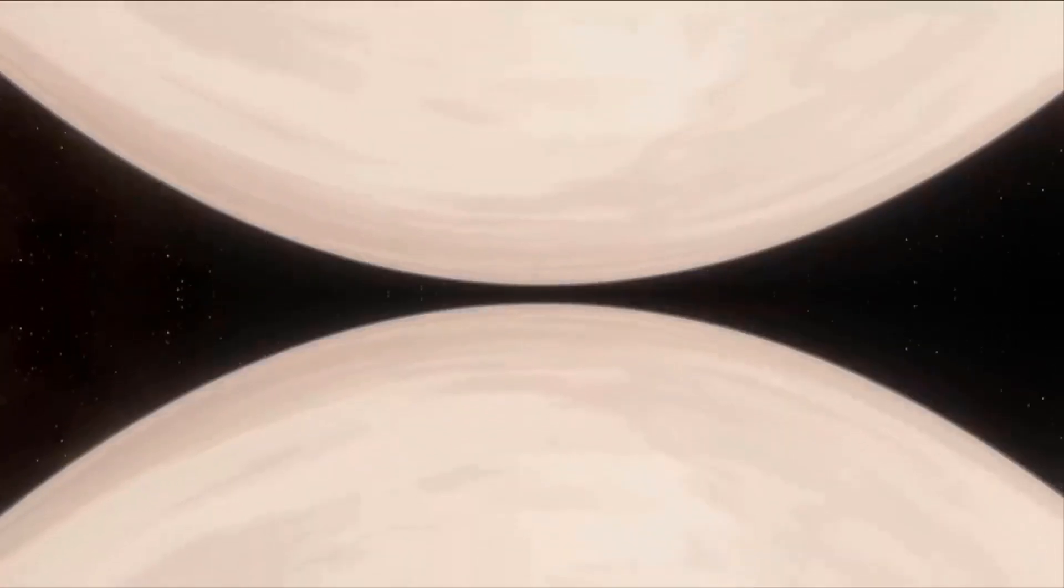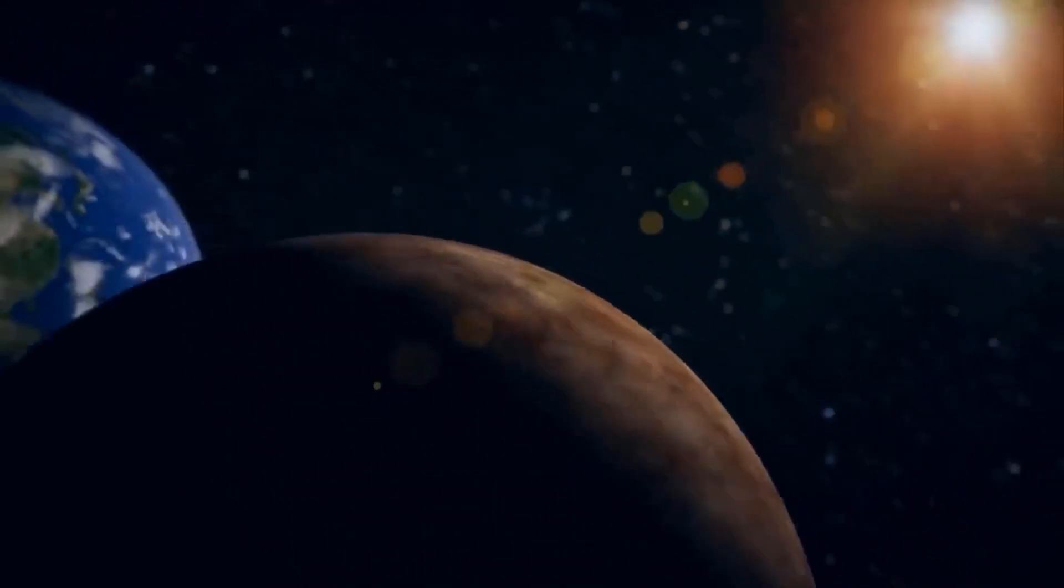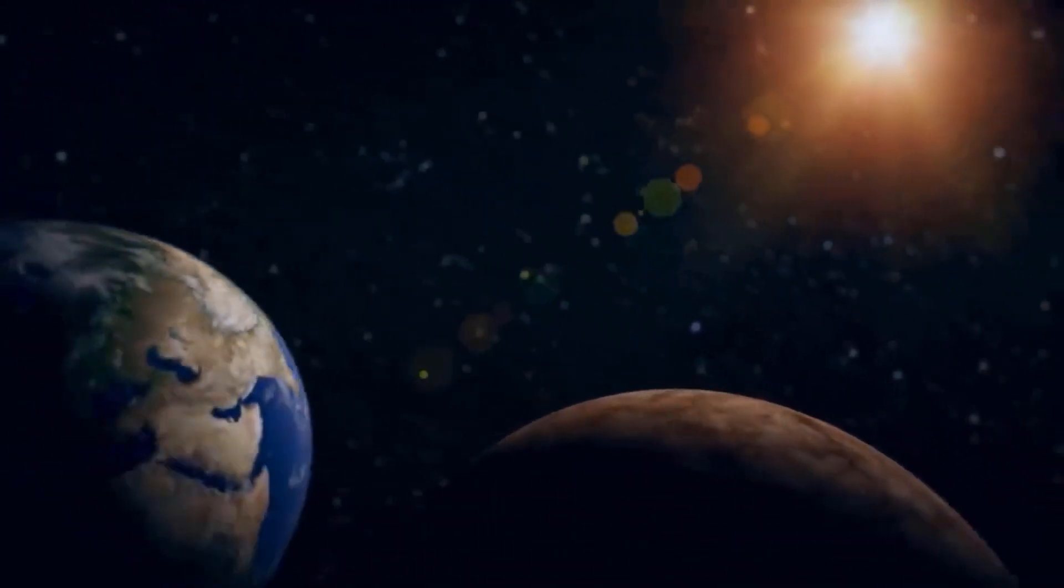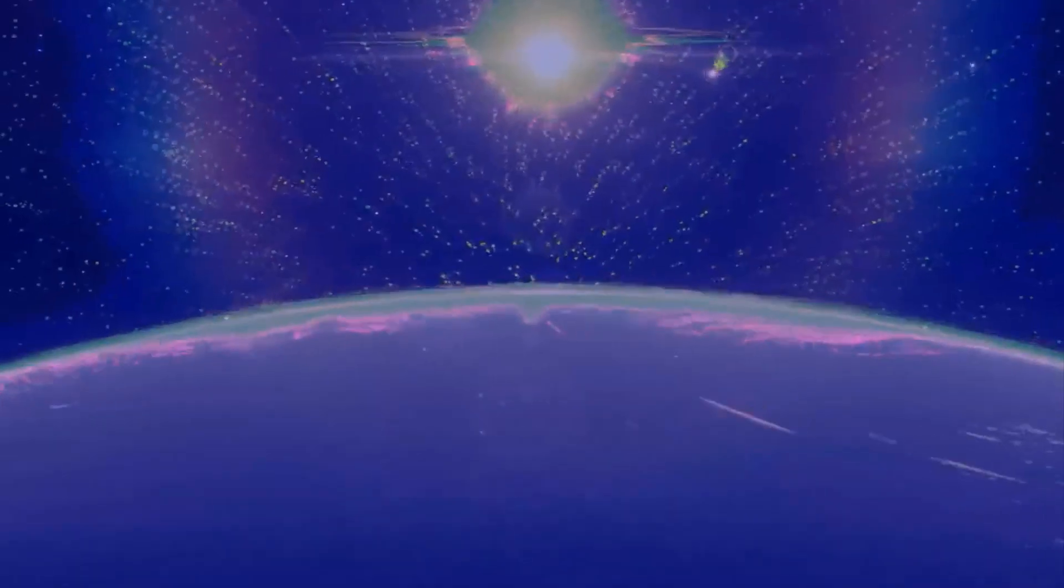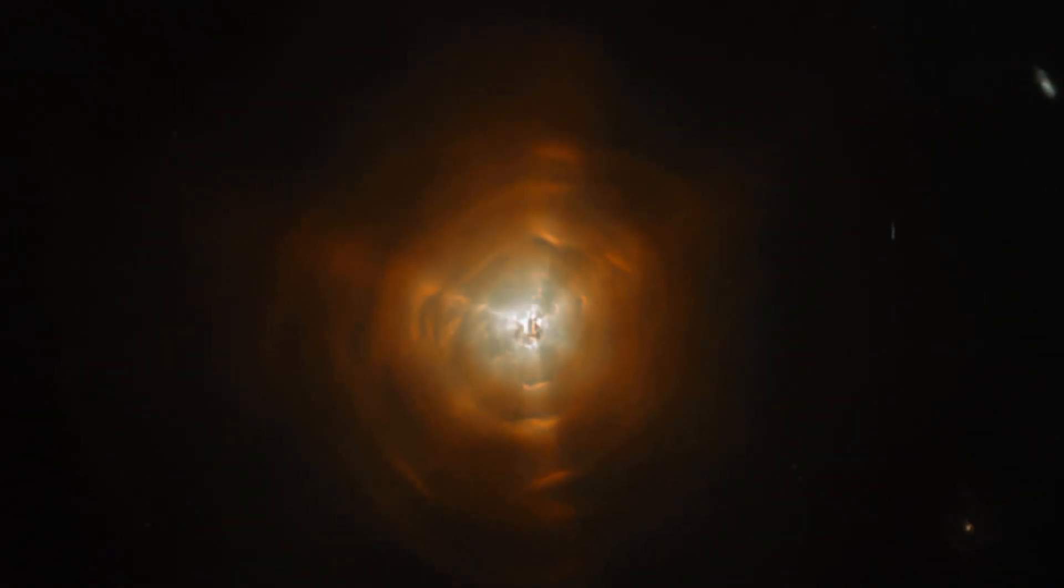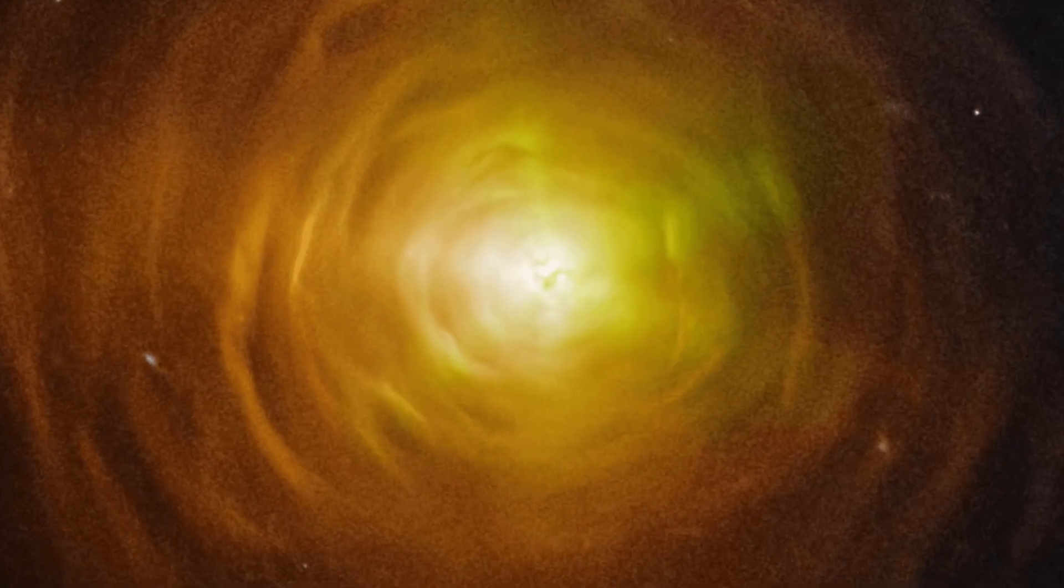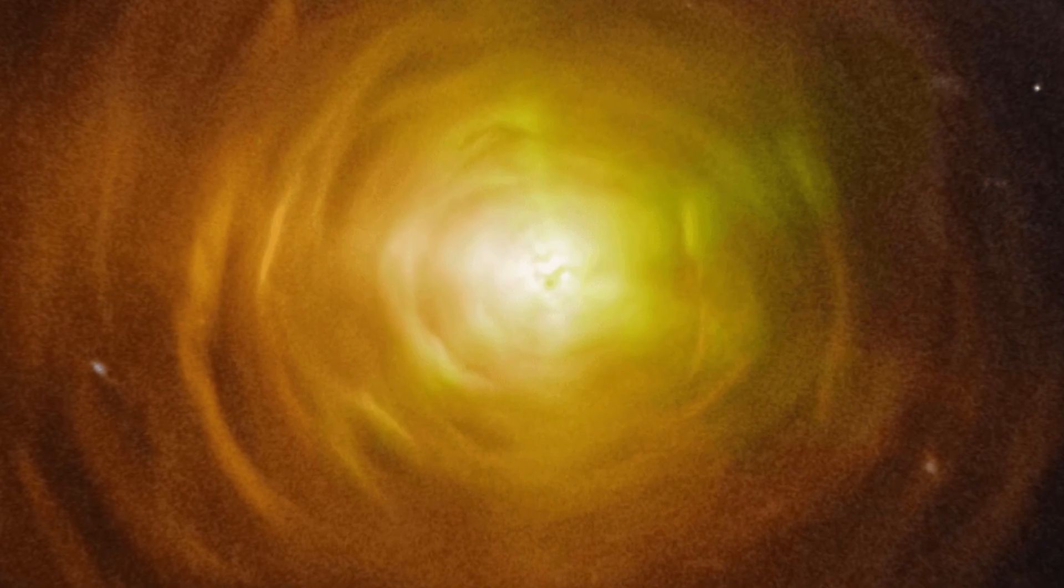Located 400 light years from Earth, CW Leonis is the closest carbon star to our planet. The relatively short distance makes it easy for astronomers to study the intricate details of CW Leonis, especially compared to other stars much further away. One such detail is the dusty clouds around the outside of CW Leonis. These are large amounts of carbon being ejected out from the star.